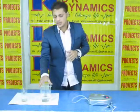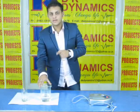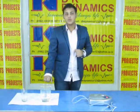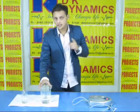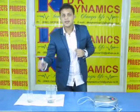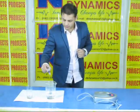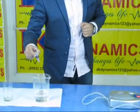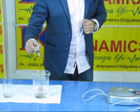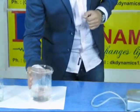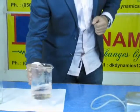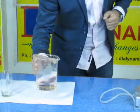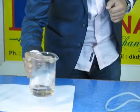Now I will demonstrate how ozone gas kills the bacteria present in the water effectively. This is a beaker containing water with bacteria. Bacteria cannot be seen by naked eyes, so we will add a dye so that we can see the presence of bacteria in the water. You can slowly see the change in the water.